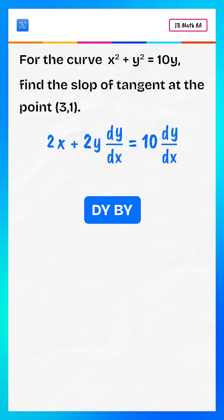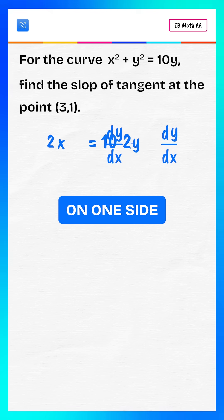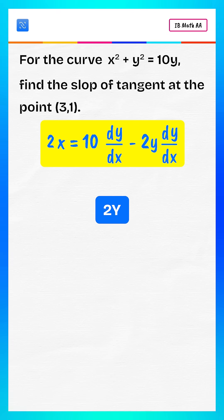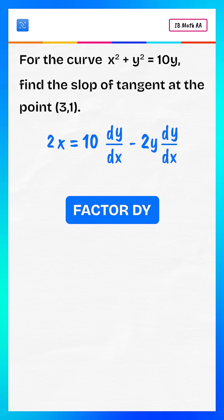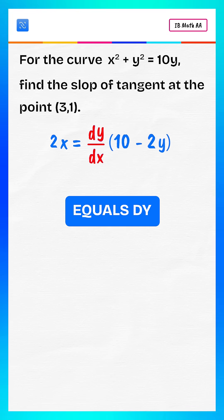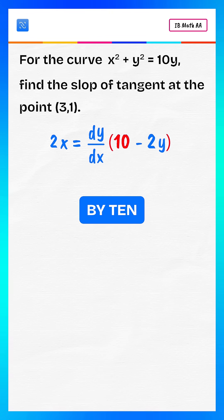Now collect dy/dx terms on one side. 2x equals 10 dy/dx minus 2y dy/dx. Factor dy/dx: 2x equals dy/dx multiplied by (10 minus 2y).